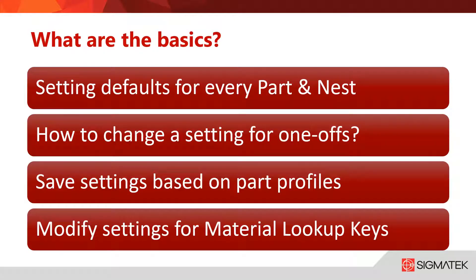So what are the basics? Firstly I will show you how to set your default configuration to give you a head start with every program that you make. Secondly we will look at how to make a quick change to your settings for a one-off part or assembly. Next we will look at how to save these configuration settings per the material and profile of the part, also known as material lookup keys. Lastly we will look at how to modify these settings for material lookup changes.